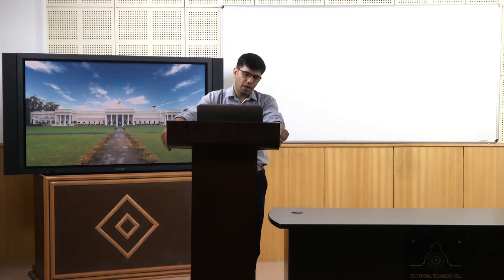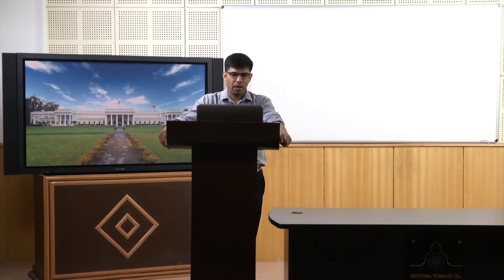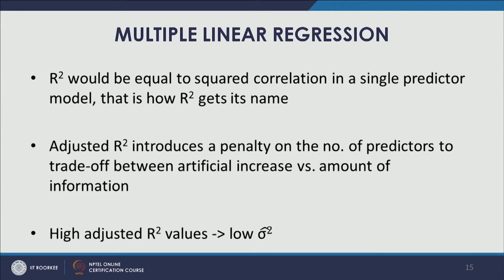If we look at a few more properties: high adjusted R-squared values would also mean low sigma-hat-squared — we will get low variance. So high adjusted R-squared values also indicate low estimated variance.